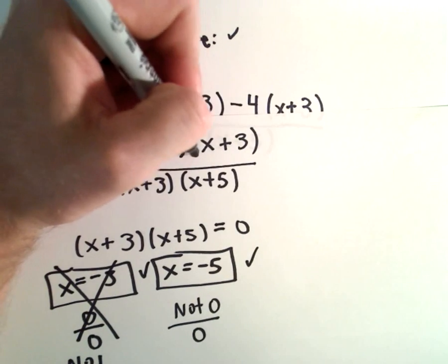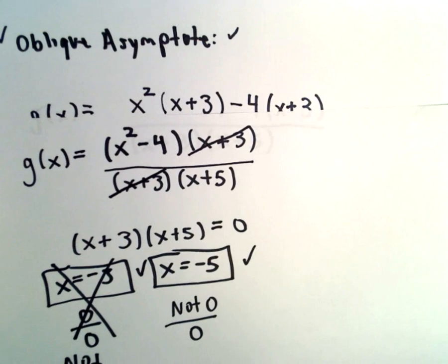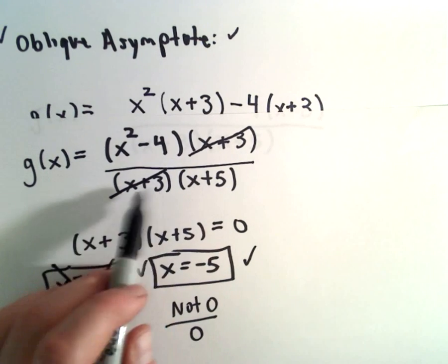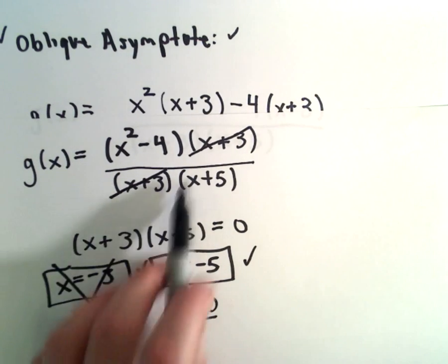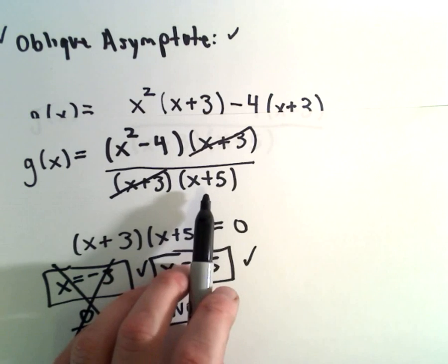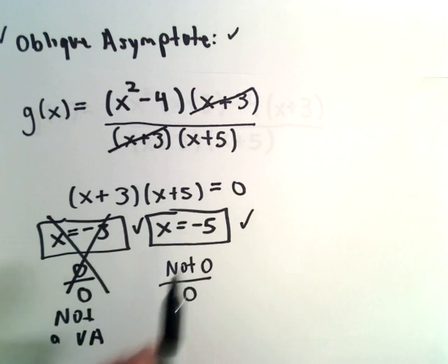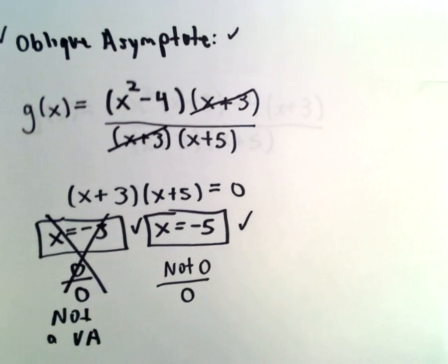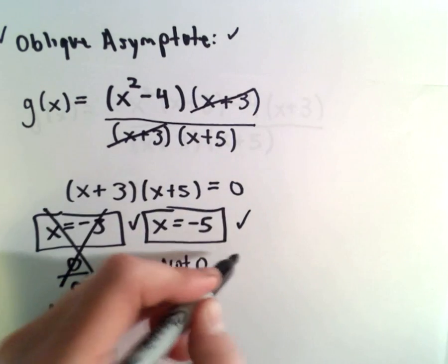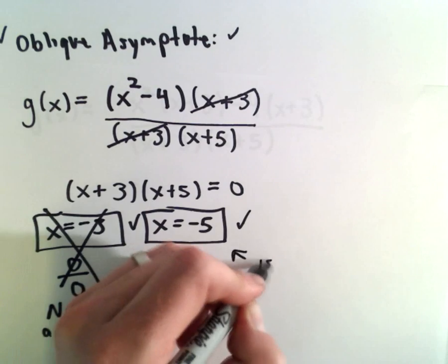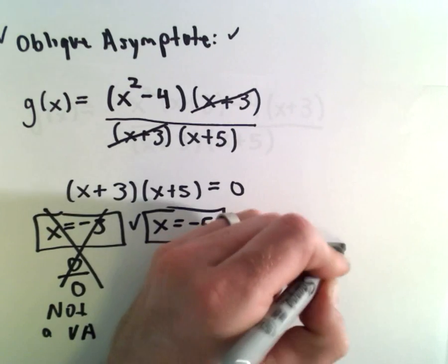Another way that people often do these is just cancel out your common factors. And once you've canceled out all your common factors, whatever's left over in the denominator, set it equal to 0, solve. That'll give you your vertical asymptote, or asymptotes. So x equals negative 5 is a vertical asymptote.